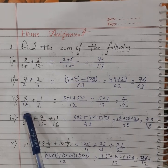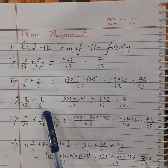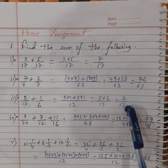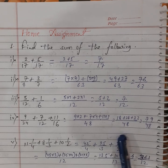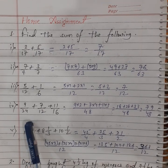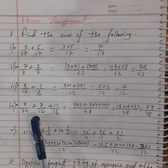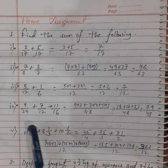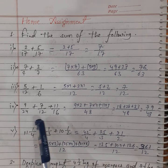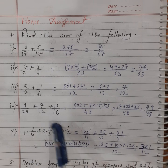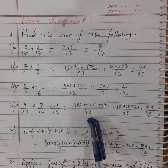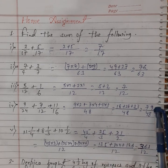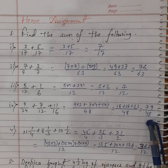5 by 12 plus 1 by 6 gives the answer 7 by 12. The fourth one: 9 by 24 plus 7 by 12 plus 11 by 16. We take the LCM of 24, 12, and 16, which is 48, and get the answer 79 by 48.